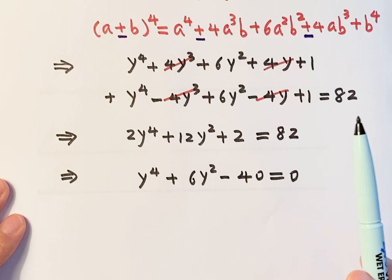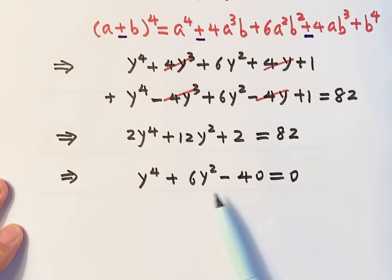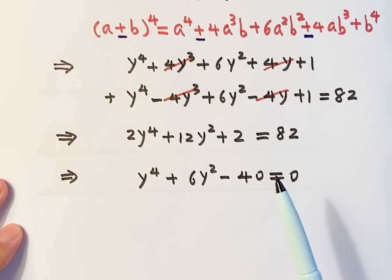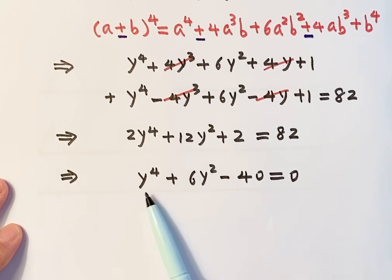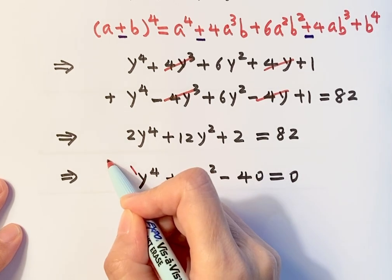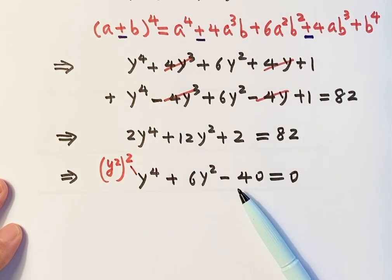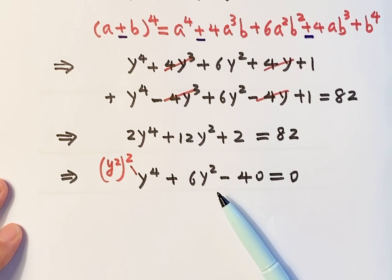The reason we set a new variable at the beginning is so that some terms cancel out. Now we have an equation with just three terms; otherwise, we'd have five terms, which is harder to solve. Since we have y⁴ and y², this is a quadratic equation in y². We can use the quadratic formula or factoring to solve it — I'm going to try factoring.